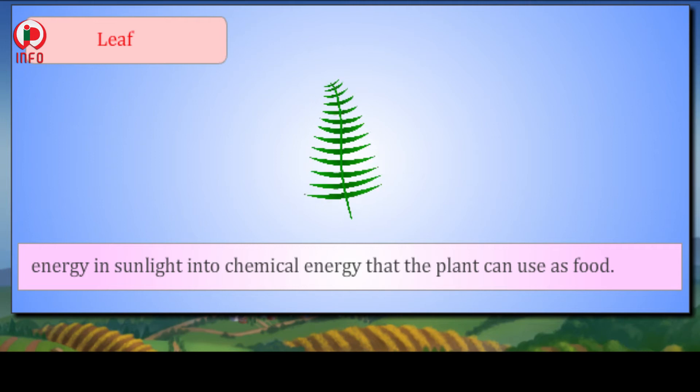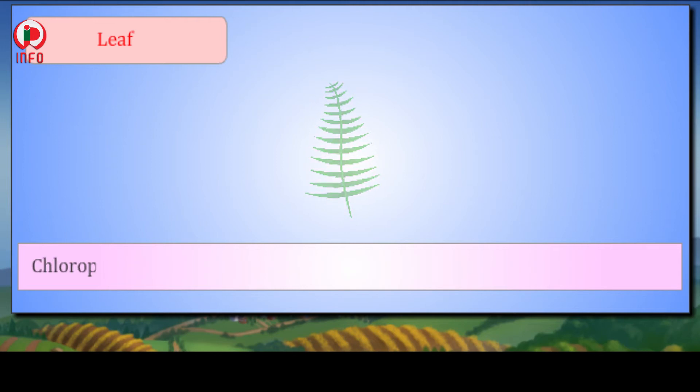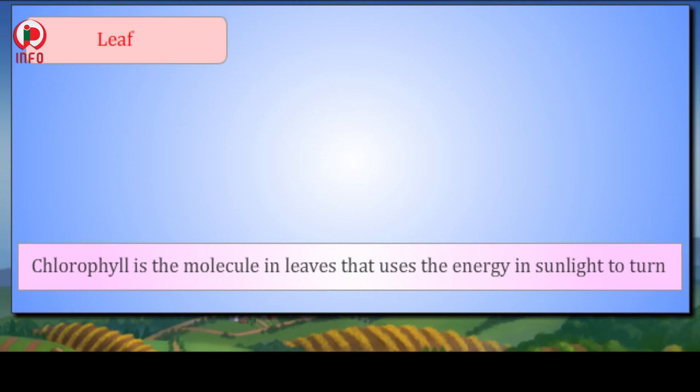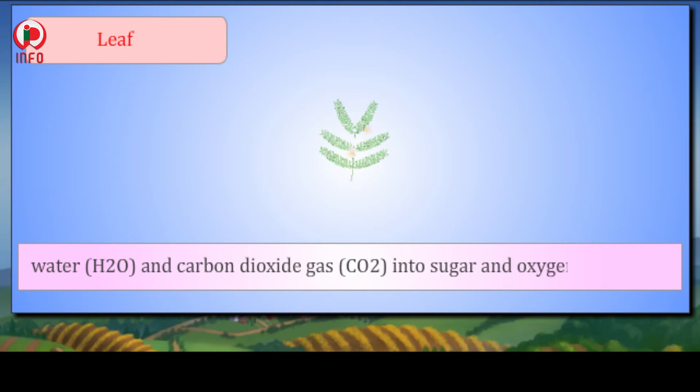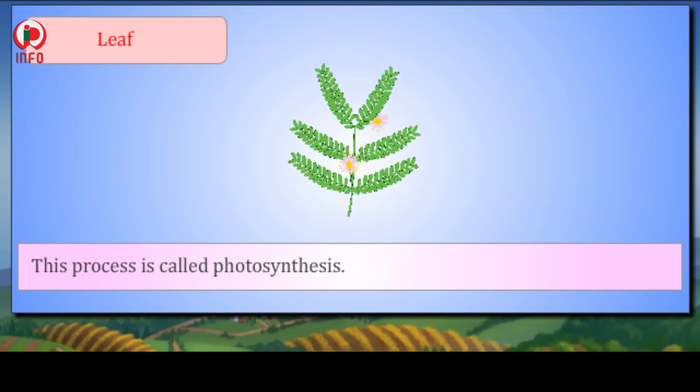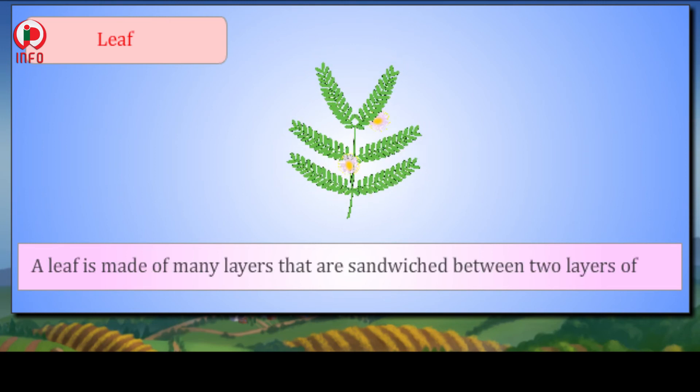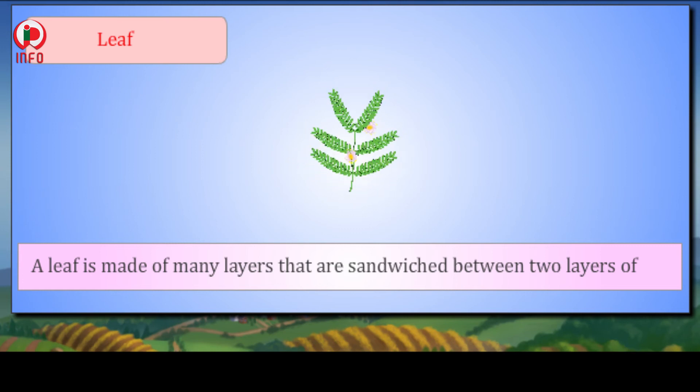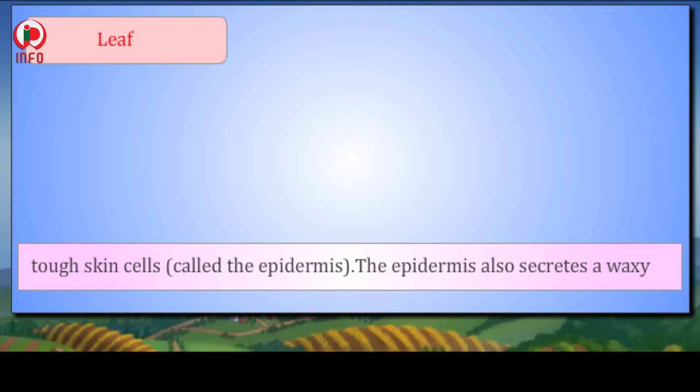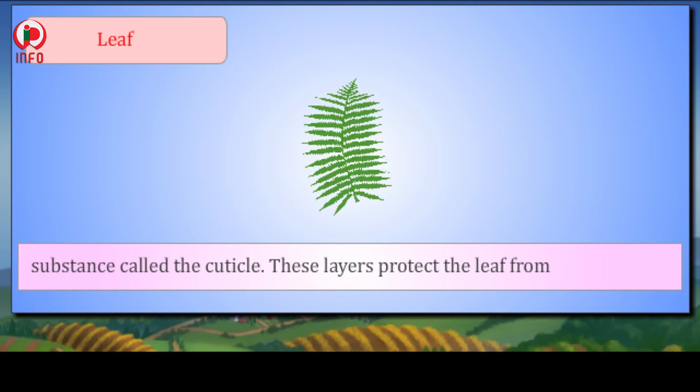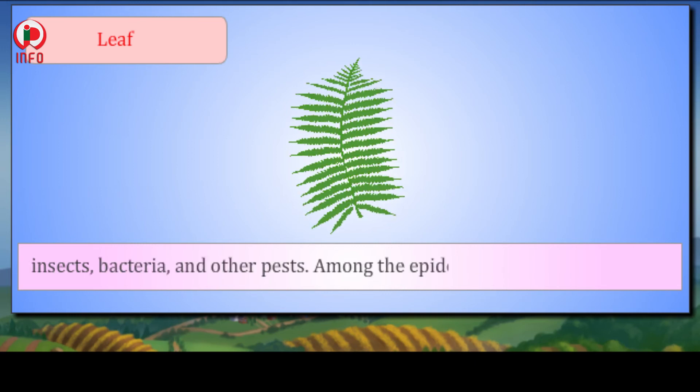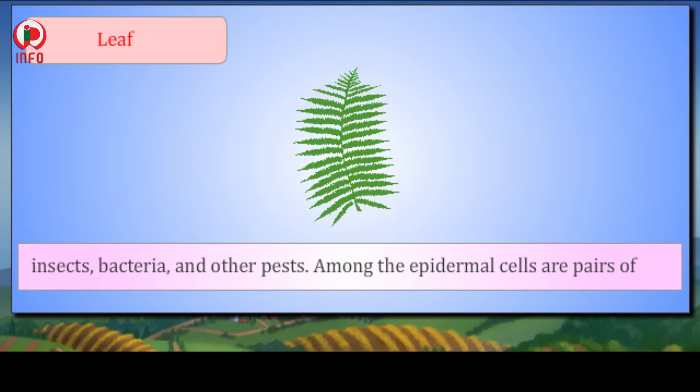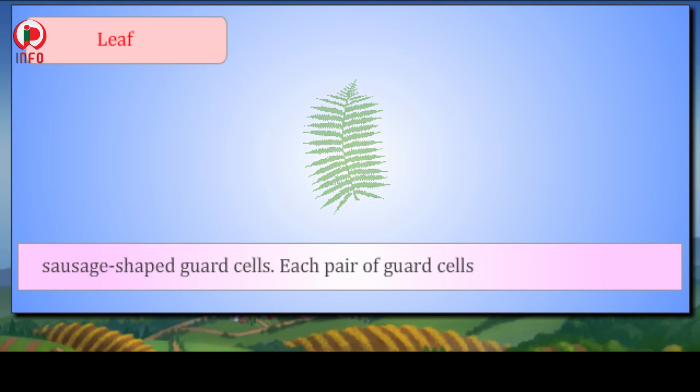Structures within a leaf convert the energy in sunlight into chemical energy that the plant can use as food. Chlorophyll is the molecule in leaves that uses the energy in sunlight to turn water and carbon dioxide gas into sugar and oxygen gas. This process is called photosynthesis. A leaf is made of many layers that are sandwiched between two layers of tough skin cells called the epidermis. The epidermis also secretes a waxy substance called the cuticle. These layers protect the leaf from insects, bacteria, and other pests. Among the epidermis cells are pairs of sausage-shaped guard cells. Each pair of guard cells forms a pore called stoma (the plural is stomata). Gases enter and exit the leaf through the stomata.